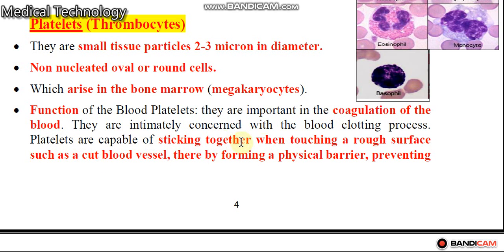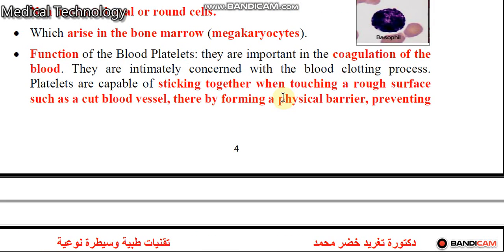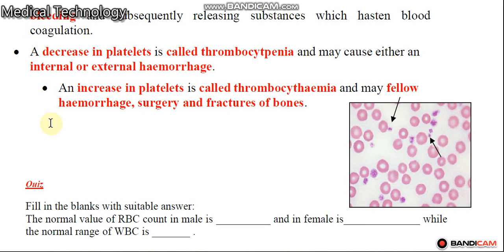Platelets are capable of sticking together when touching a rough surface, such as a cut blood vessel, thereby forming a physical barrier preventing bleeding. A decreased number of platelets is called thrombocytopenia, which causes internal or external hemorrhage — the person continues to bleed when injured.